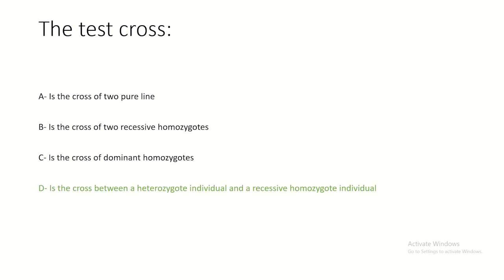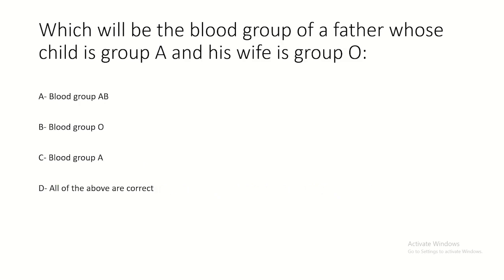Test cross is the cross between a heterozygous individual and a recessive homozygous individual. For blood group: if the wife is O and the child is A, the father must have donated the A allele, so the father could be AB, AA, or AO - answers A and C are correct.